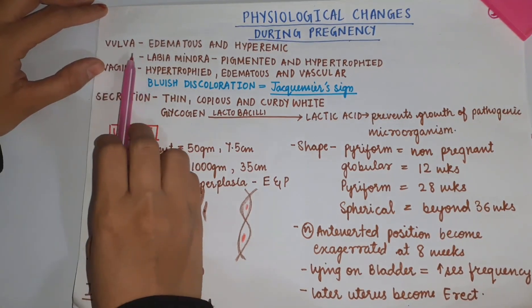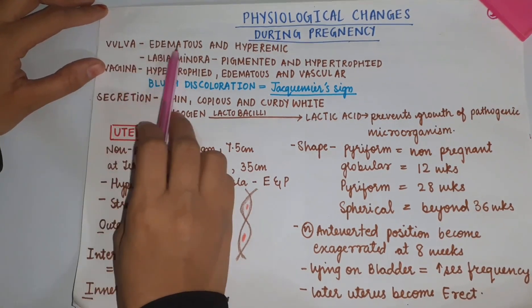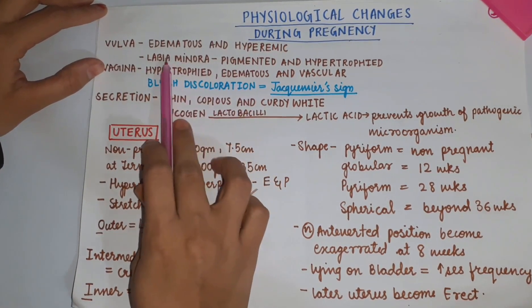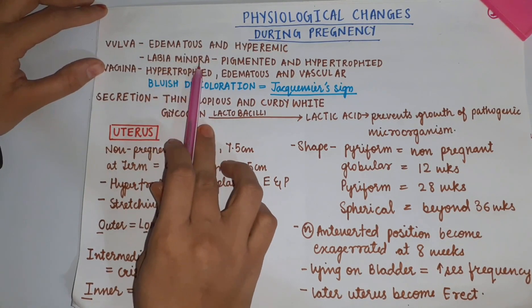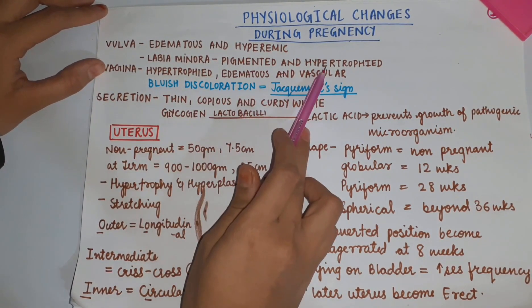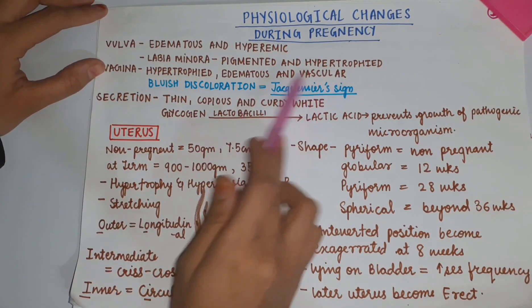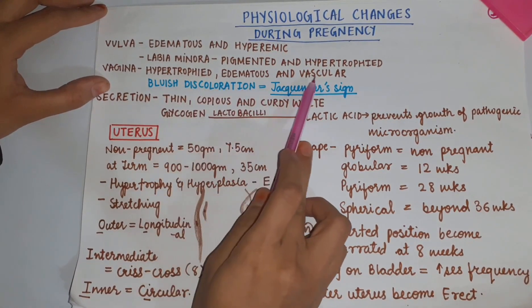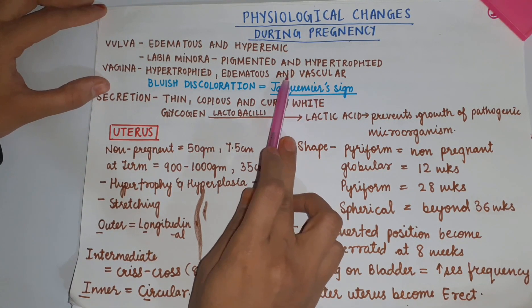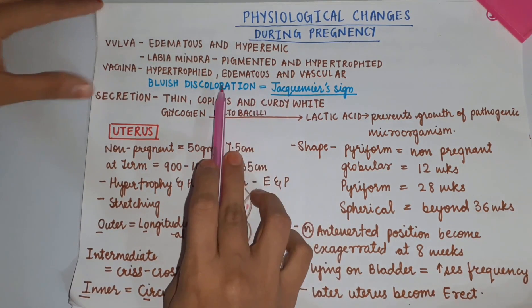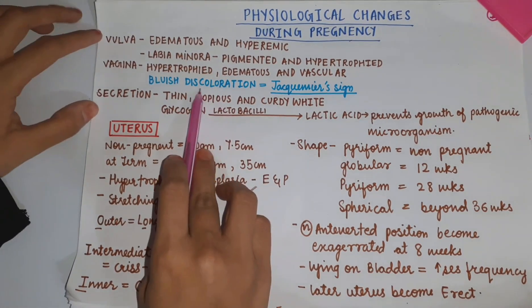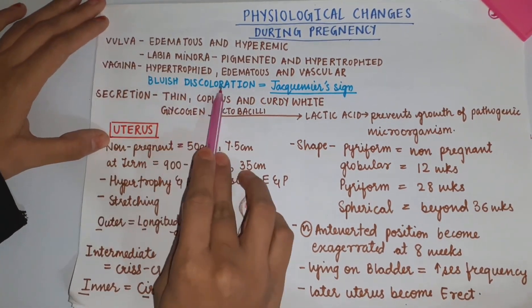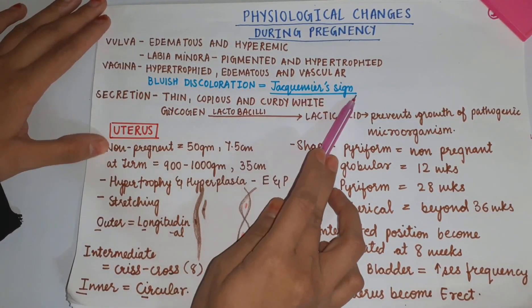Changes in vulva: it becomes edematous and hyperemic. In labia minora, it becomes pigmented and hypertrophic. Vagina becomes hypertrophic, edematous and vascular. Because of being vascular, it gives a bluish discoloration, which is called Jacquemin's sign.